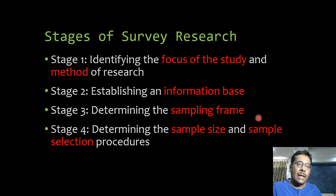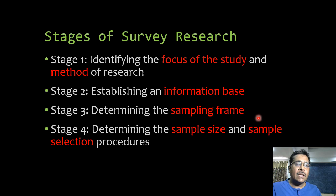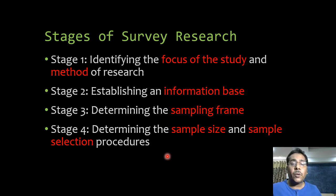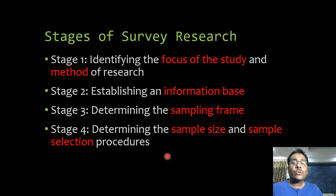After establishing the information base, we determine the sampling frame, which is a measure of the population from which the sample is selected. For example, if you want to study people in a particular district, the sampling frame would be a voters' list for that district. Then we determine the sample size and sample selection procedures, covering random, non-random, probability, and non-probability sampling.